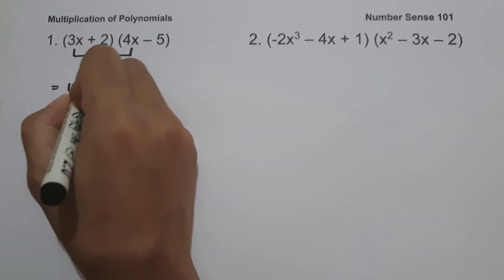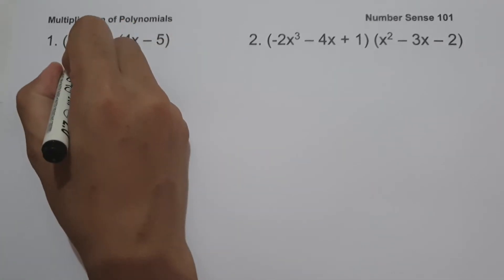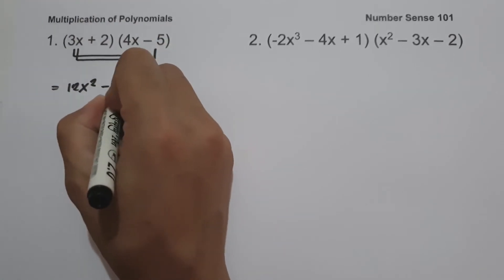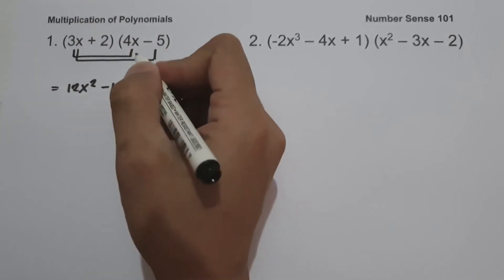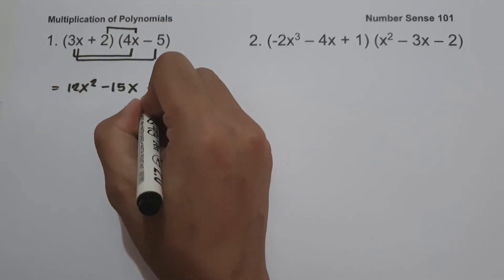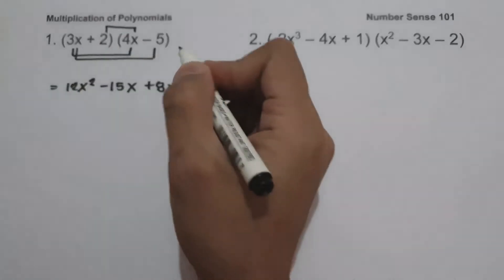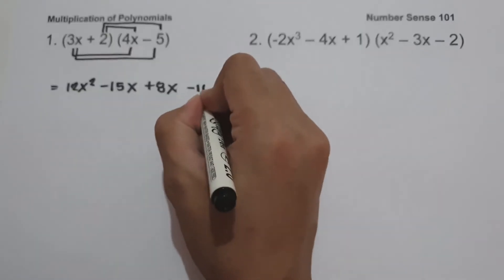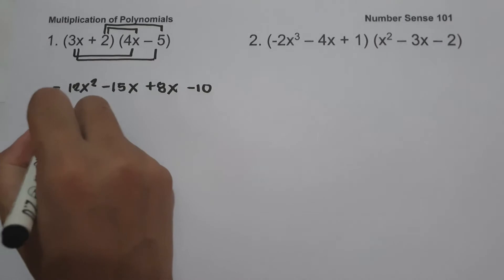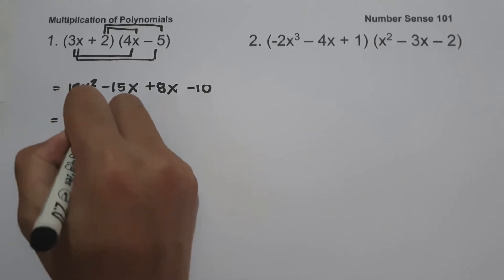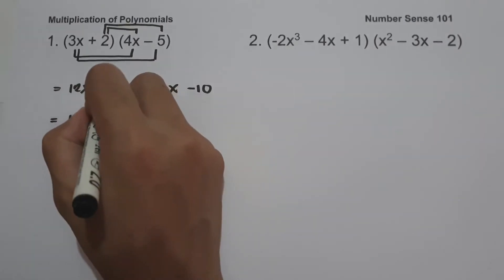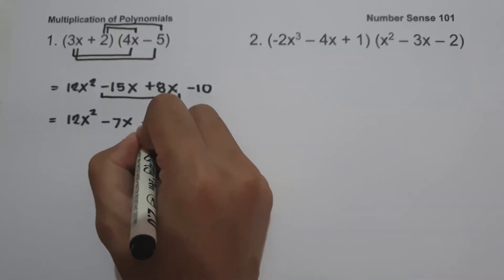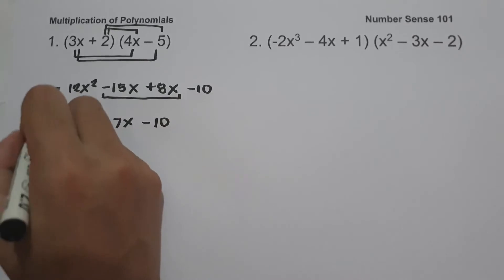Then 3x multiplied by negative 5 is negative 15x. Two multiplied by 4x is 8x, and 2 multiplied by negative 5 is negative 10. So let us combine like terms: 12x squared, then negative 15x plus 8x is negative 7x, and negative 10. This will be our answer.